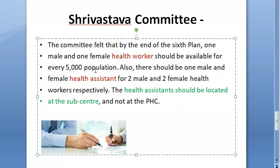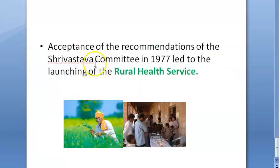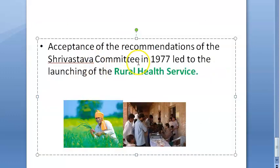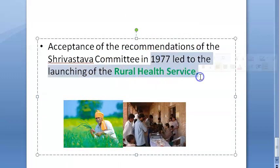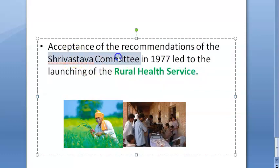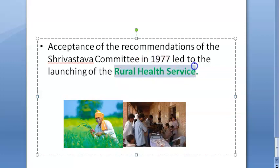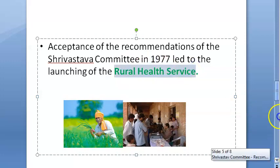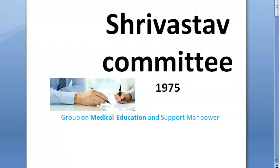To calculate: for 5,000 people you will have one health worker each; for 10,000 people you will have one health assistant each. Based on these recommendations, in 1977 the government launched the Rural Health Service. The Srivastav committee came in 1975, and in 1977 the Rural Health Service was launched based on its recommendations.